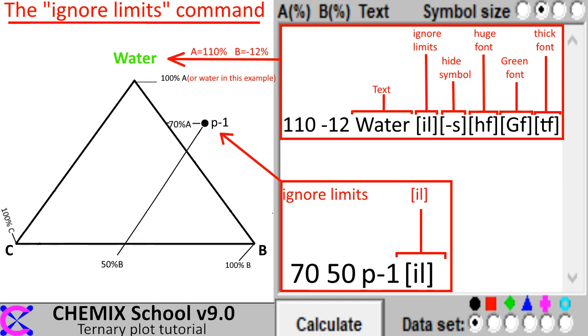To display symbols and text outside the triangular frame requires a command that tells the software to display the result even when inserted coordinates exceed the limits of the triangular frame. This command is the ignore limits command.